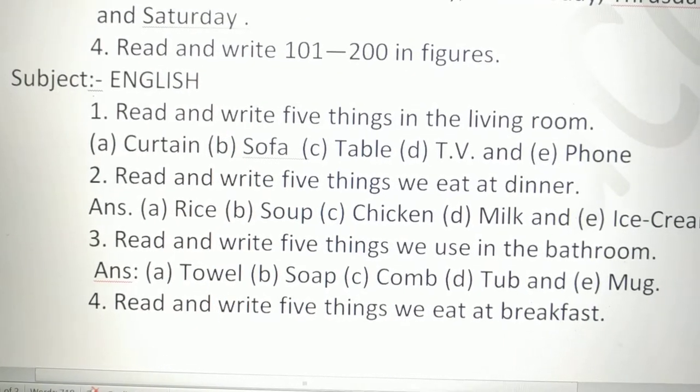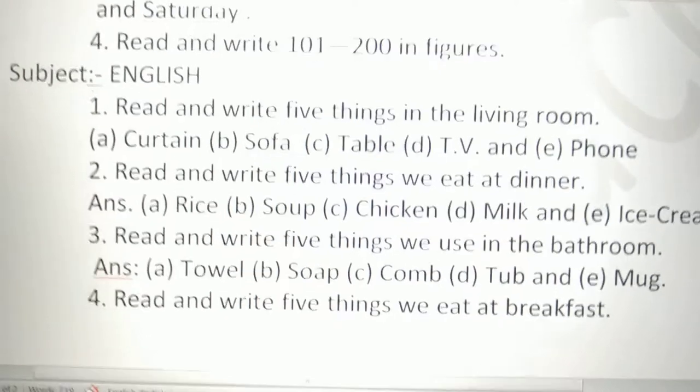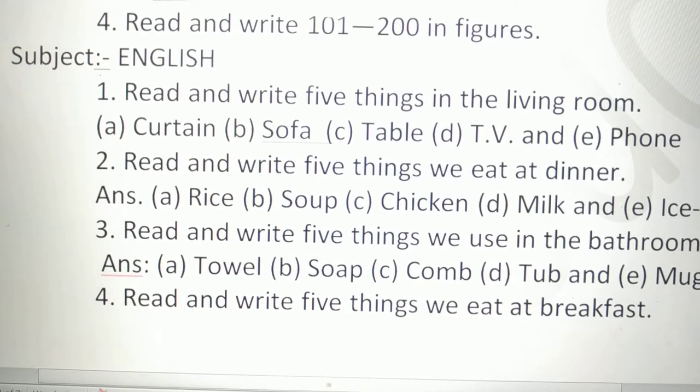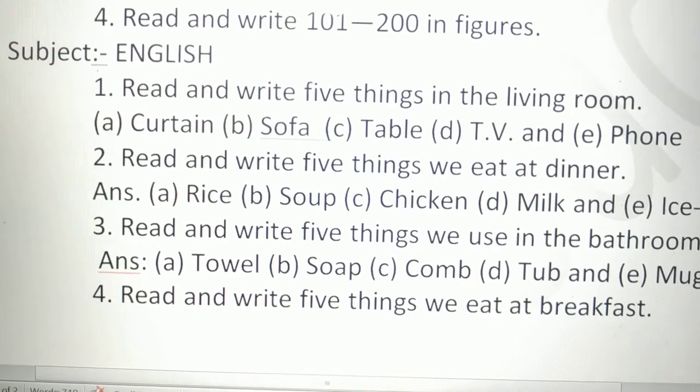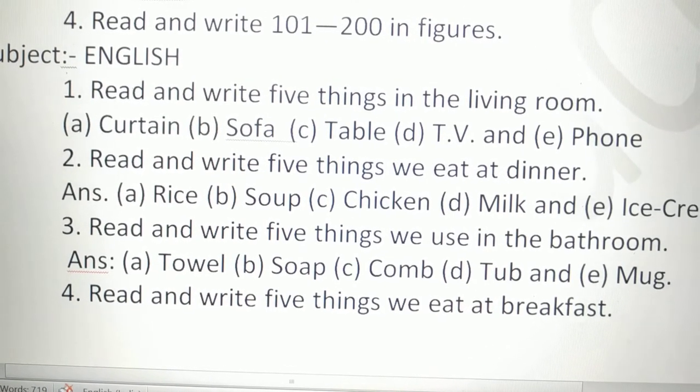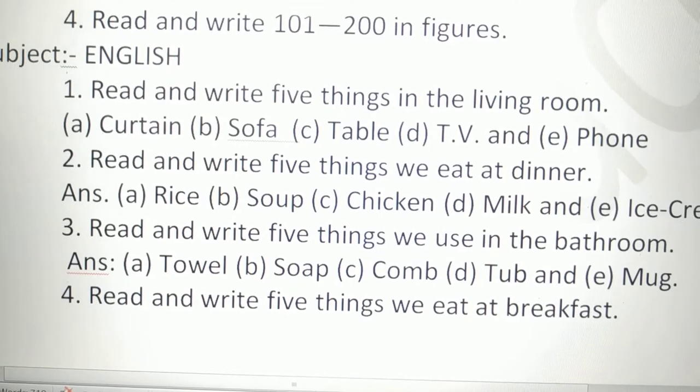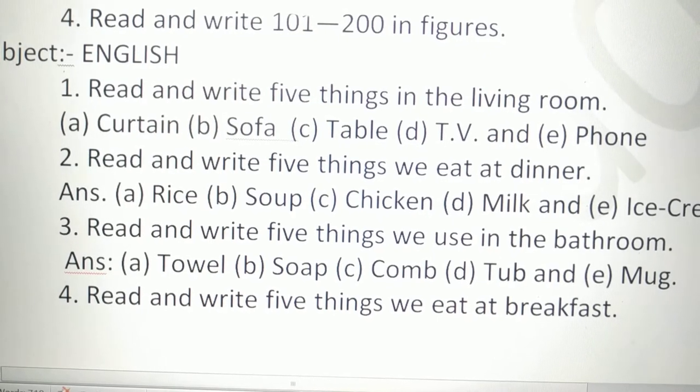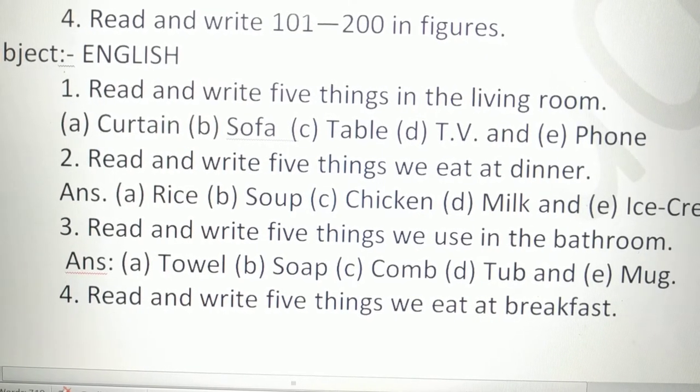Next subject, English. Read and write five things in the living room. Answer: a carpet, sofa, table, TV, and phone.